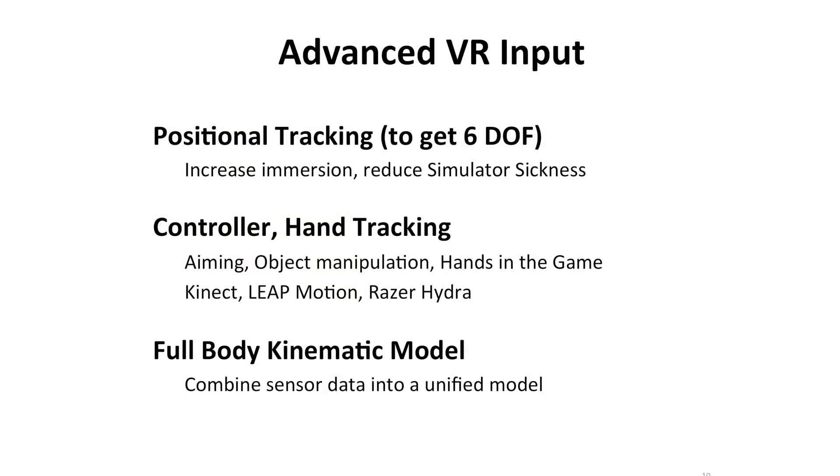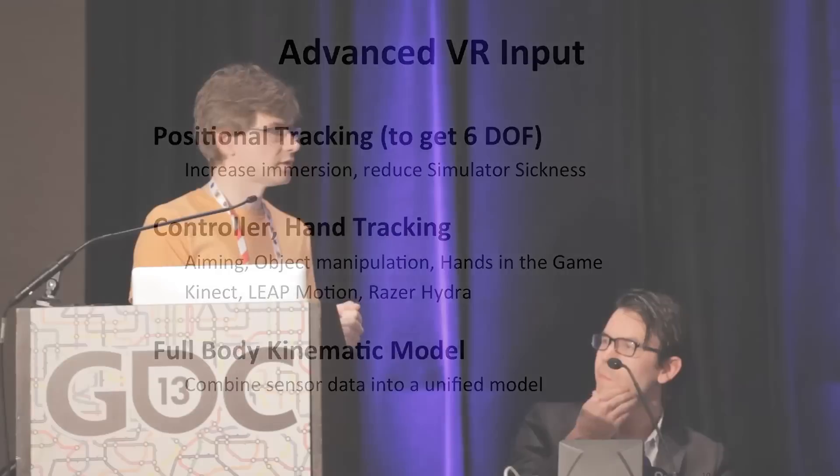Beyond that is more advanced input — an exciting area for much more complete immersion. We are not there yet, but we are seriously researching it and the community has a lot of interest. In particular, positional tracking is important. With a gyroscope and current sensor fusion you can look in any direction, but if you move left, right, forward, back, or lean down, that extra information is not reflected, which means you can feel the world view dragging with you.